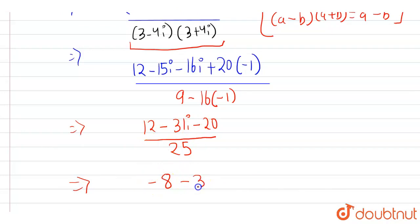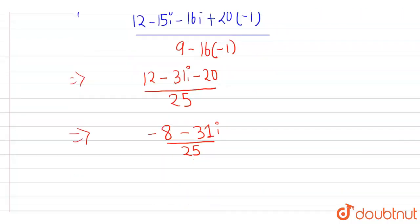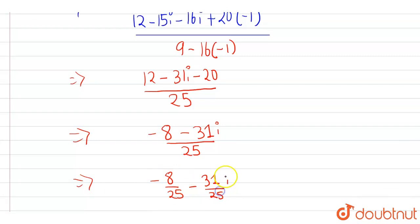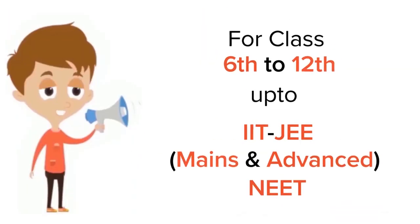So now the expression is (-8 - 31i) / 25. We can write this as -8/25 - 31/25 · i. This is our final answer. Thank you.